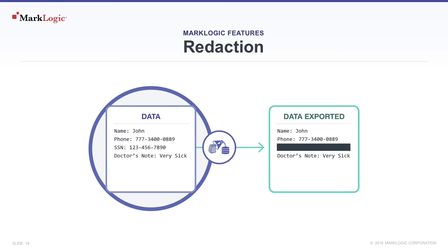What if data is to be exported from MarkLogic? For example, if handing off the results of clinical trials to external researchers, they shouldn't be getting the personally identifying information for participants. We need to make sure they can still correlate the data, but without access to social security numbers and the like. For that reason, MarkLogic allows for the creation of redaction rules, allowing data to be adjusted on export.